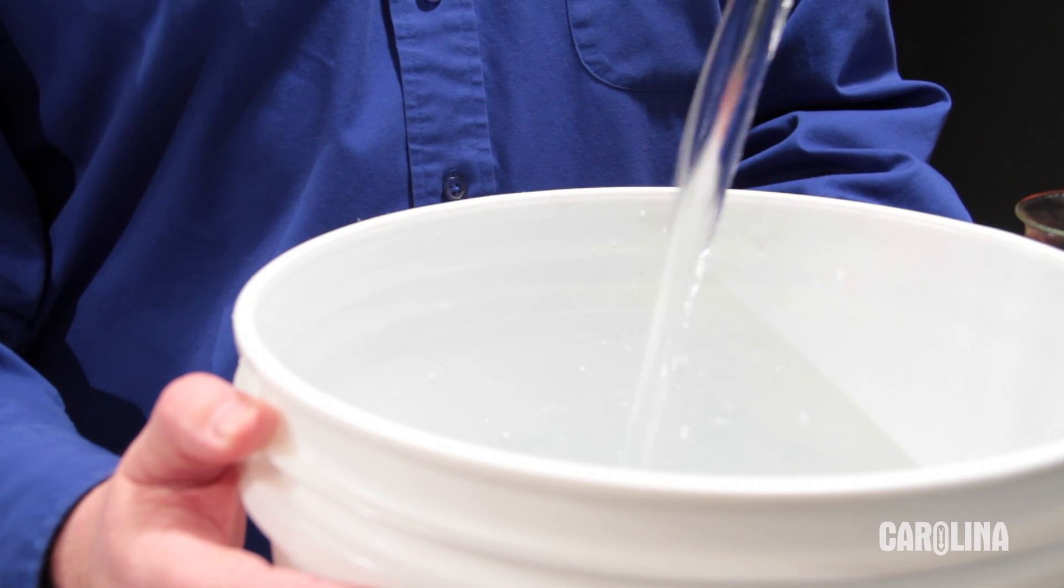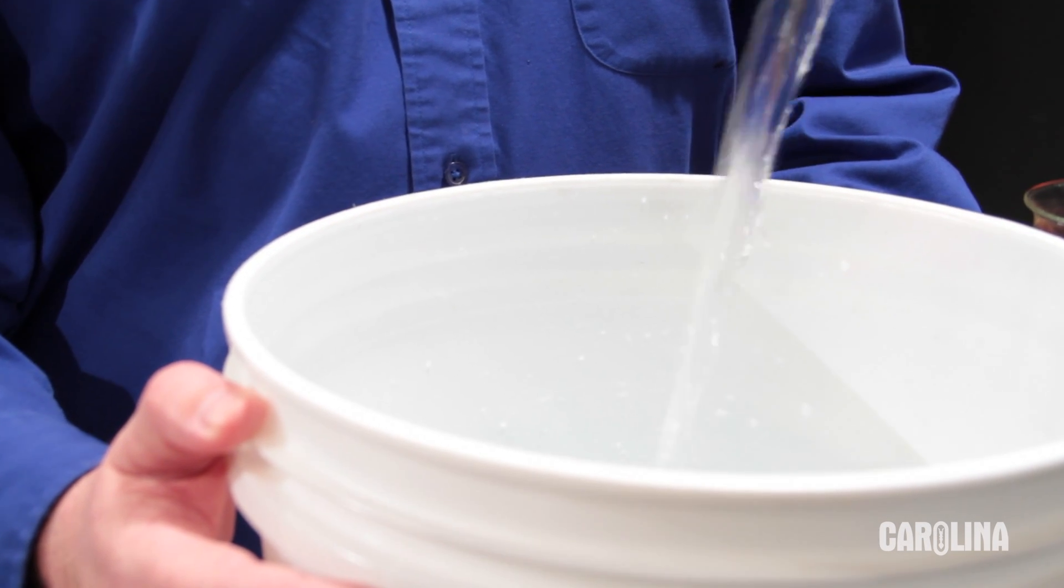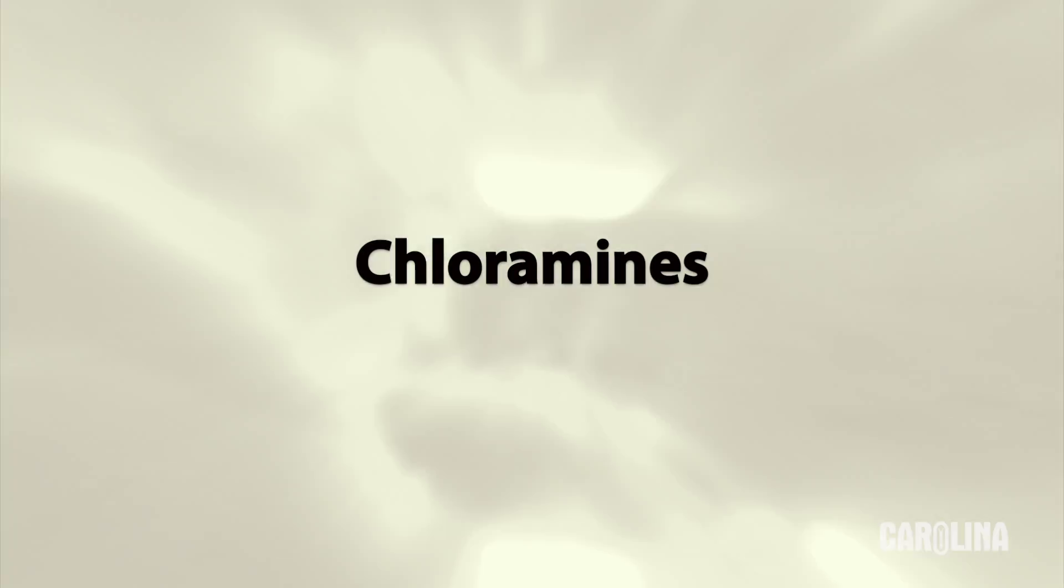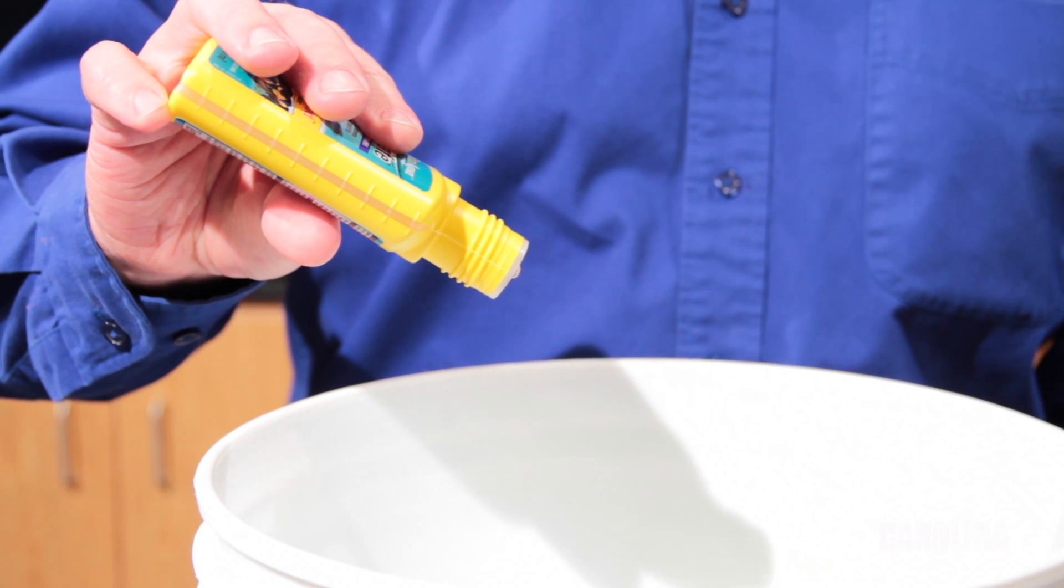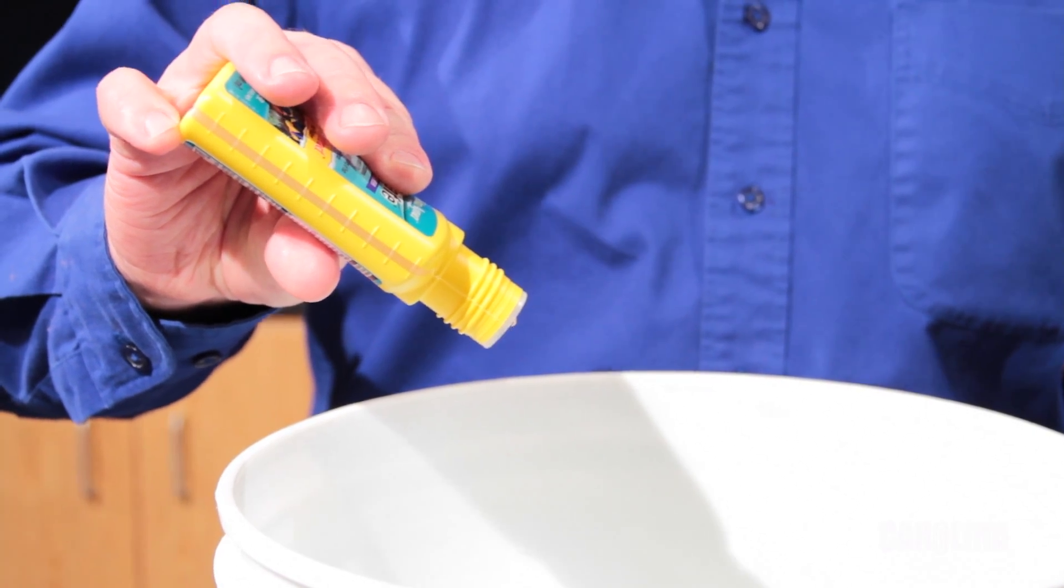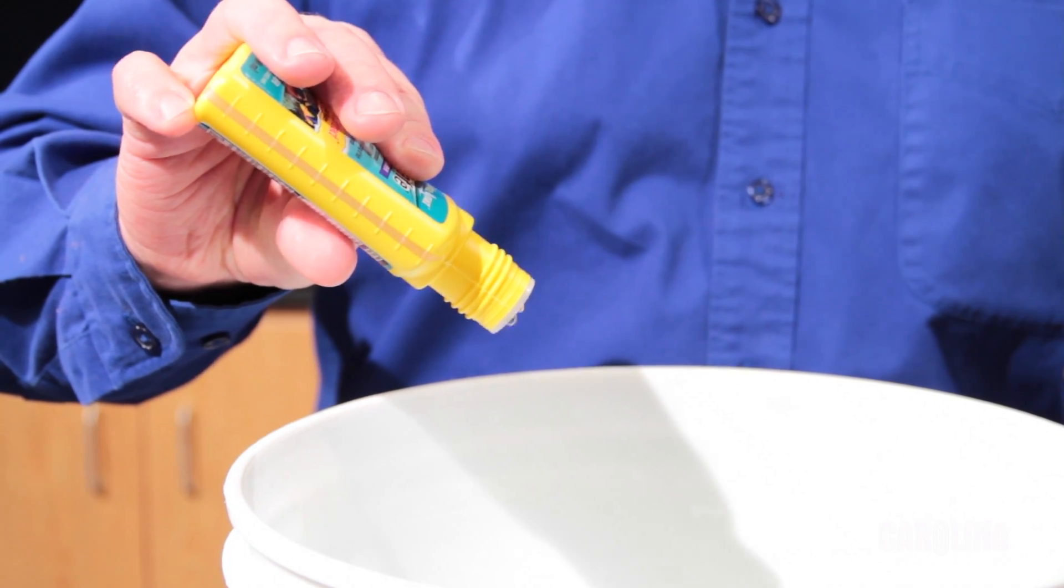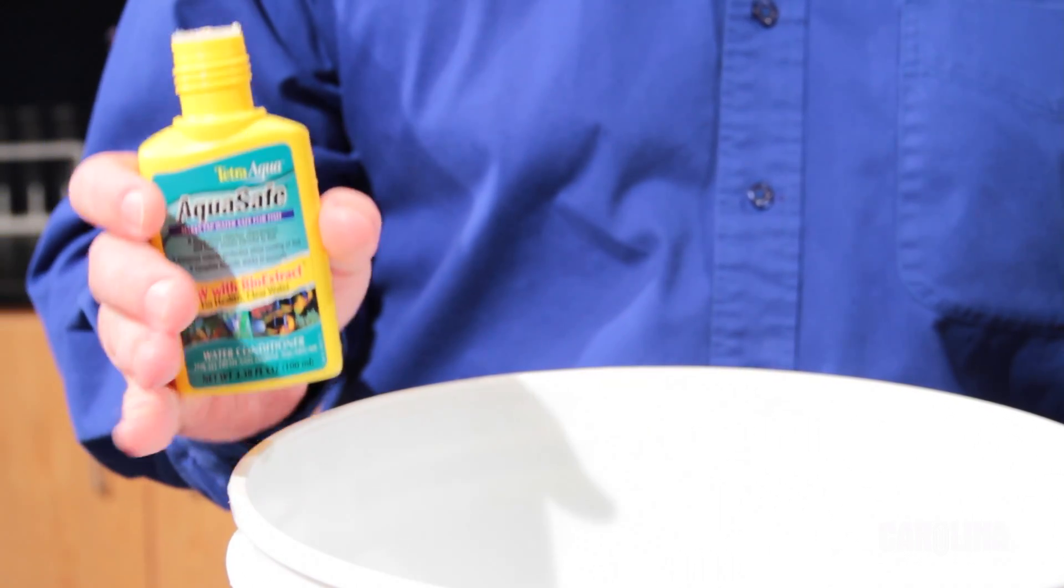Have plenty of room temperature water on hand for the tadpoles. Use spring water or tap water. Most tap water now contains chloramines to improve drinking water quality. However, chloramines will kill your tadpoles and most aquatic organisms. Tap water must be treated with a dechlorinator that removes chloramines. Prepare your water before you receive your tadpoles.